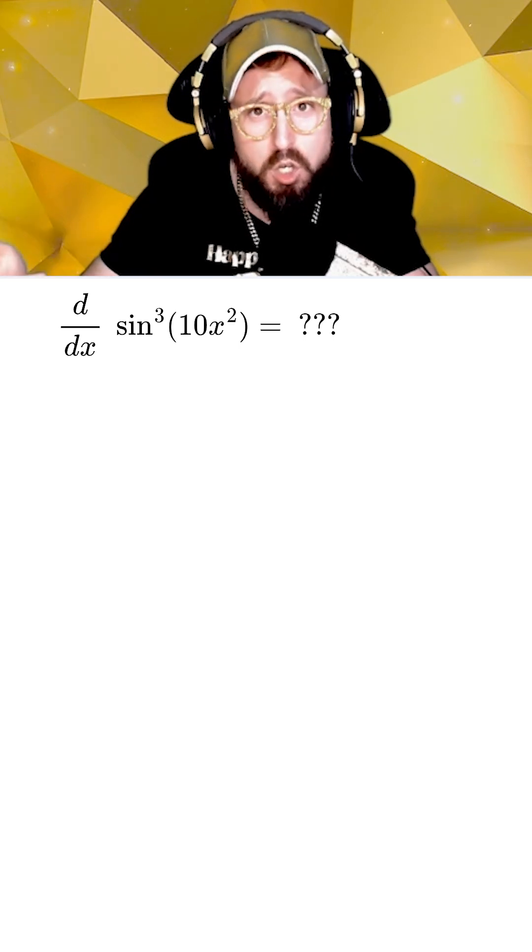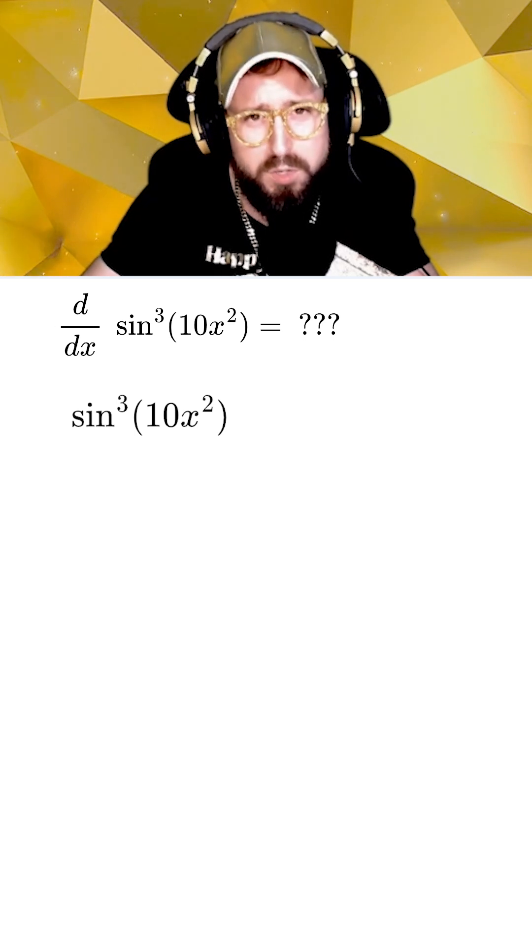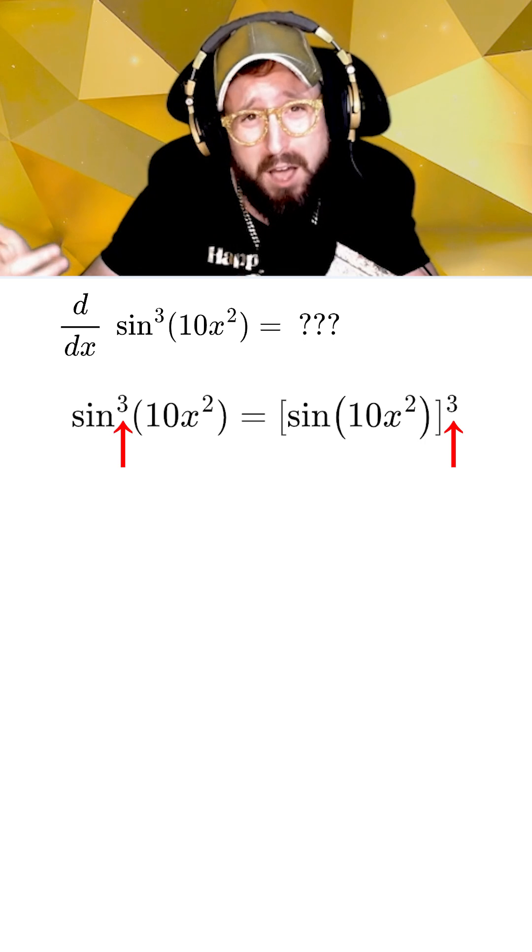Let's try taking the derivative of sine cubed of 10x squared. For these types of trig functions, I like to rewrite sine cubed as the sine of 10x squared all to the third. This makes it easier to see where the outermost operation is.